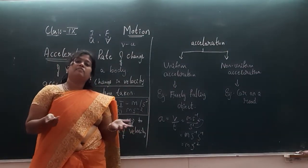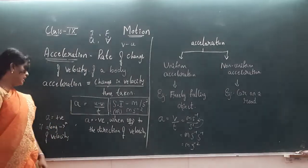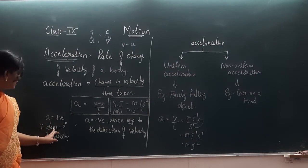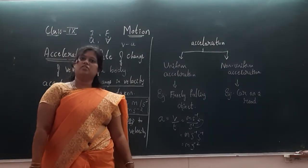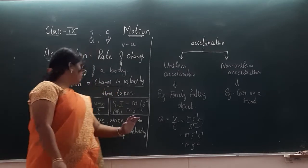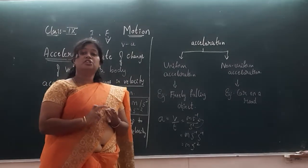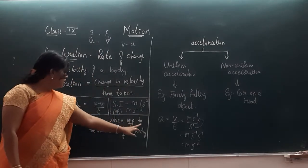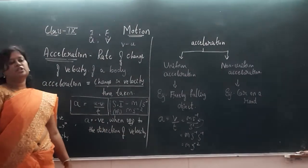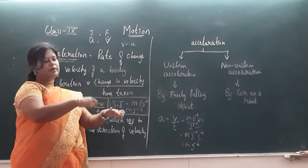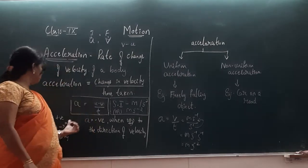This acceleration can be positive and it also can be negative. Acceleration is positive if the motion is along the direction of velocity. So if you are driving a bicycle and accelerating in the same direction as your motion, that is the direction of velocity, then your acceleration is positive.